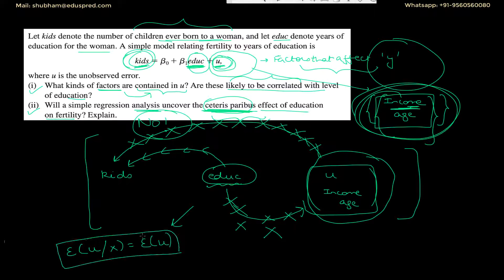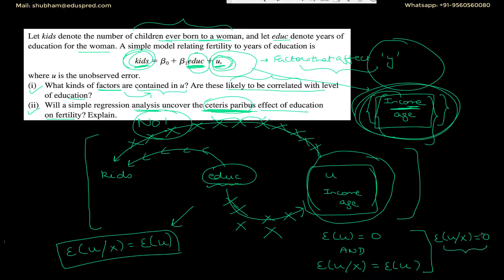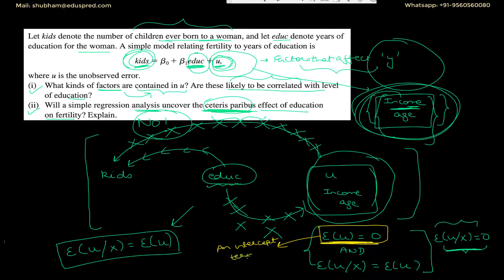Let me explain this assumption in detail. We have the assumption that E(U) = 0, and the assumption that E(U|X) = E(U). Combining these gives E(U|X) = 0, which you must have seen in many places. The first part — E(U) = 0 — is not something we worry about as long as there is an intercept term (beta zero) in the model. As I'll show in the next video, if you have an intercept term, E(U) = 0 is not an issue.